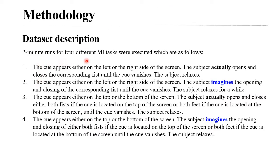The two motor imagery tasks were as follows: first, a cue appears on the left or right side of the screen and the subject imagines opening and closing the corresponding fist until the cue vanishes. Second, a cue appears on the top or bottom of the screen and the subject imagines opening and closing both fists if the cue is at the top, or both feet if the cue is at the bottom.